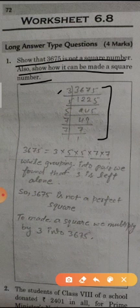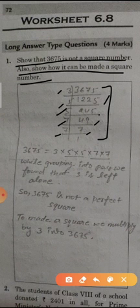3 divides to give 1225, 5 divides to give 245, again 5 divides to give 49, then 7 divides to give 7, then 7 divides to give 1. So 3, 5, 5, 7, 7 these are the factors.